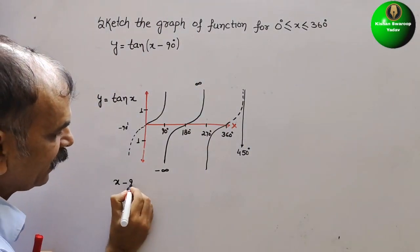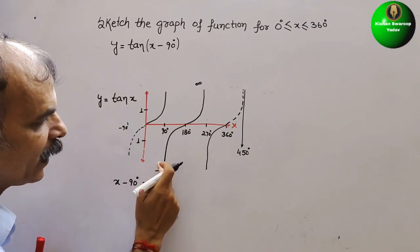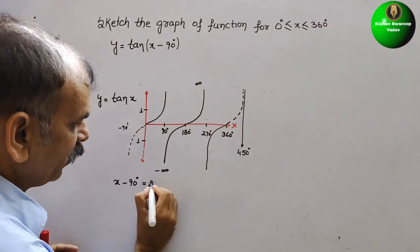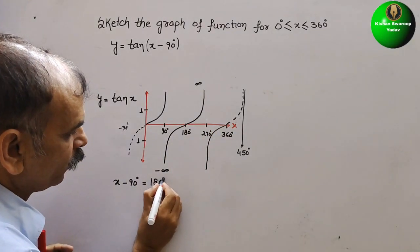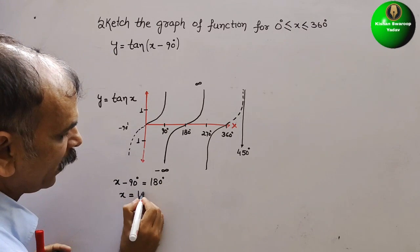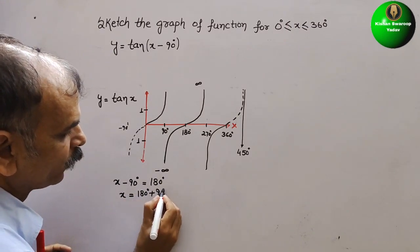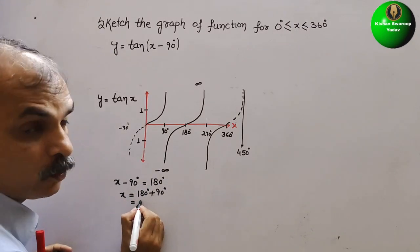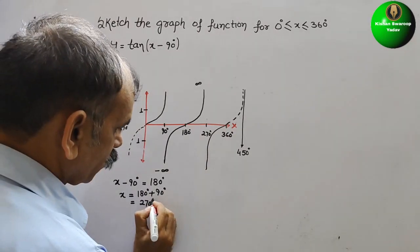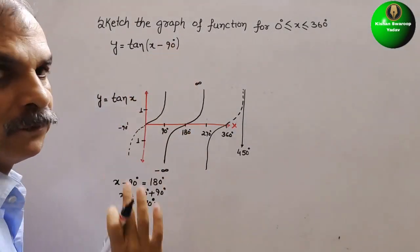x minus 90 — one complete cycle is of 180°. So here we will write 180. So now x is equal to 180° plus 90°, that is equal to 270°. Now we will make our full graph.